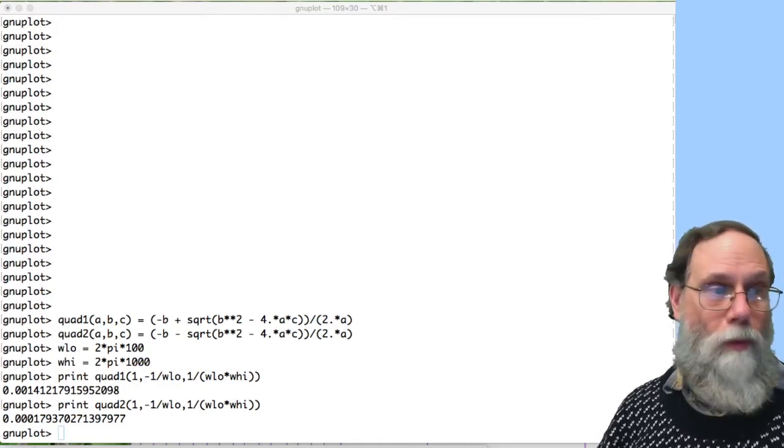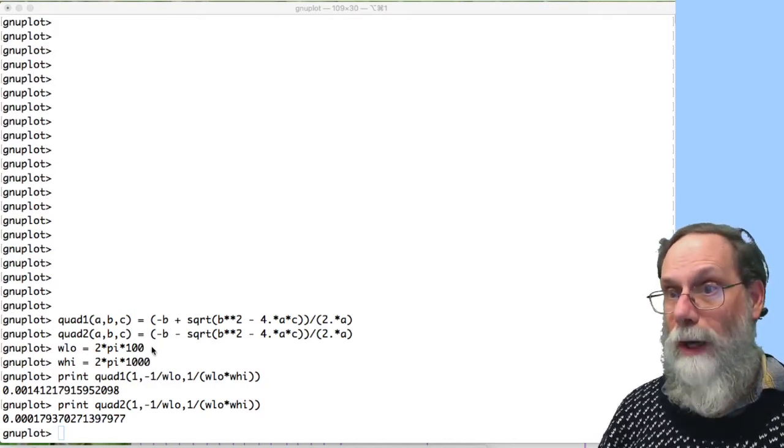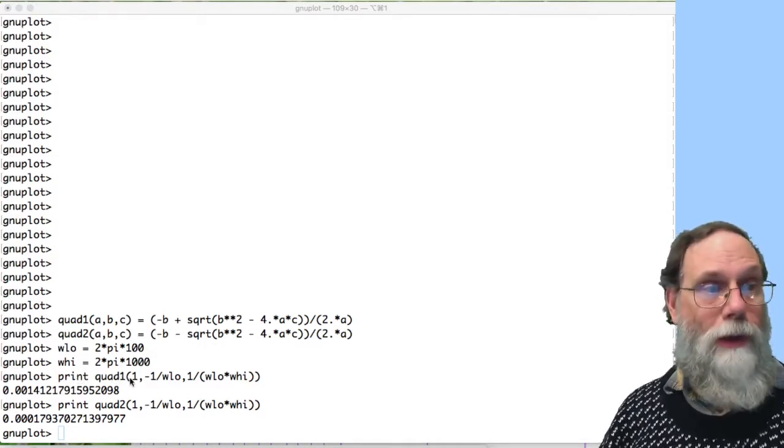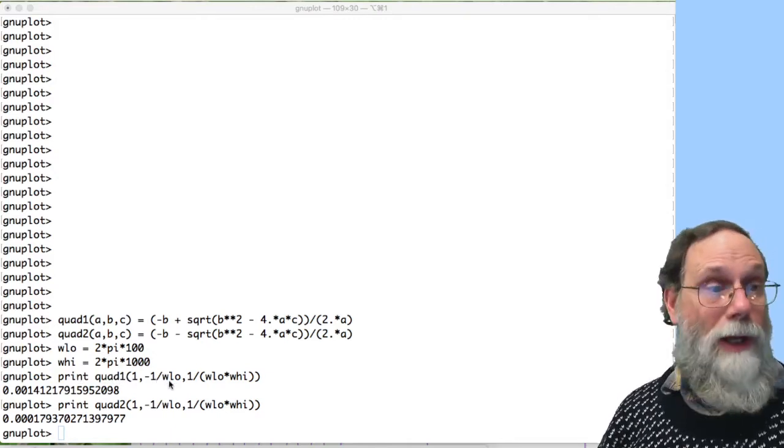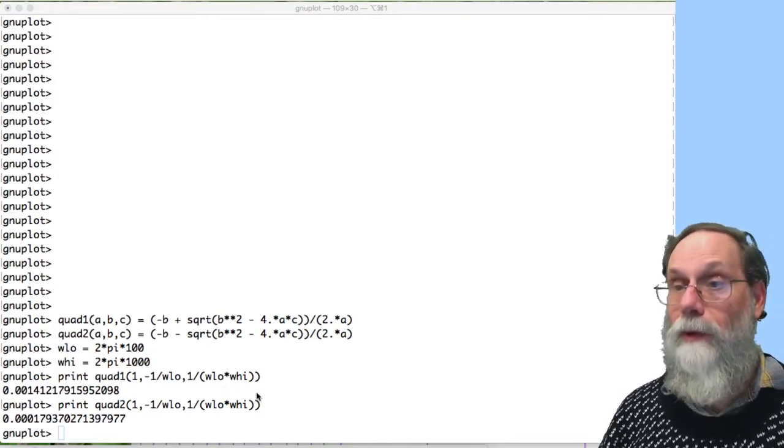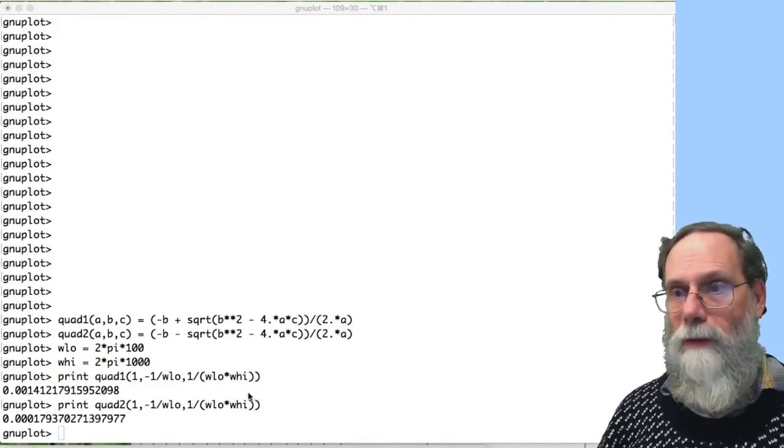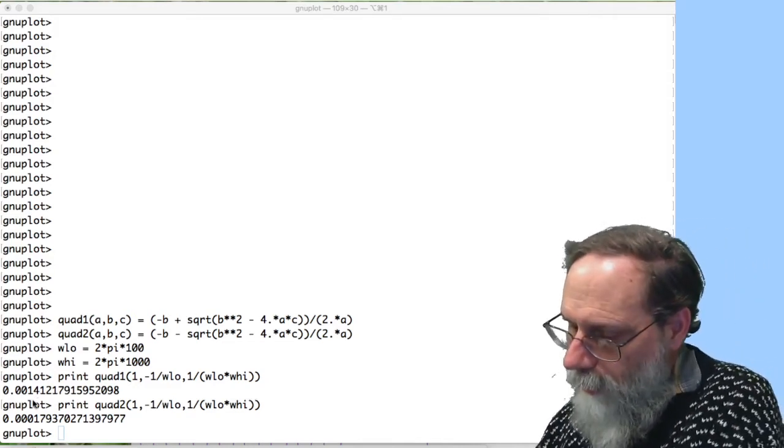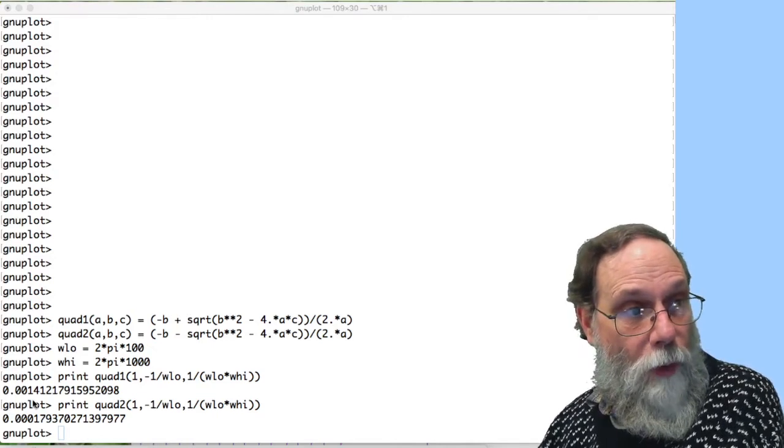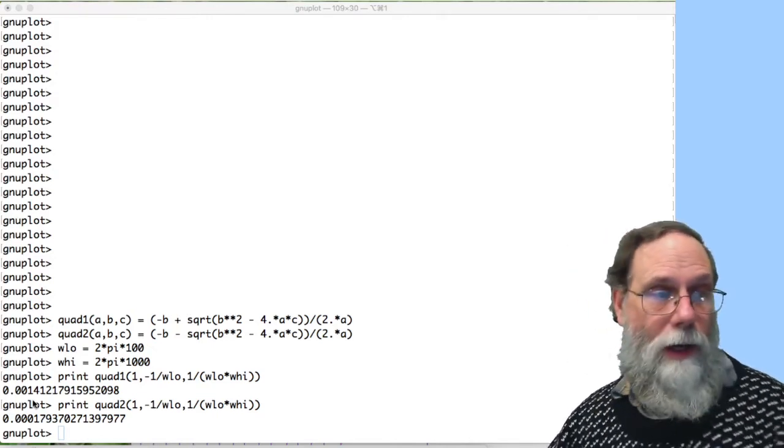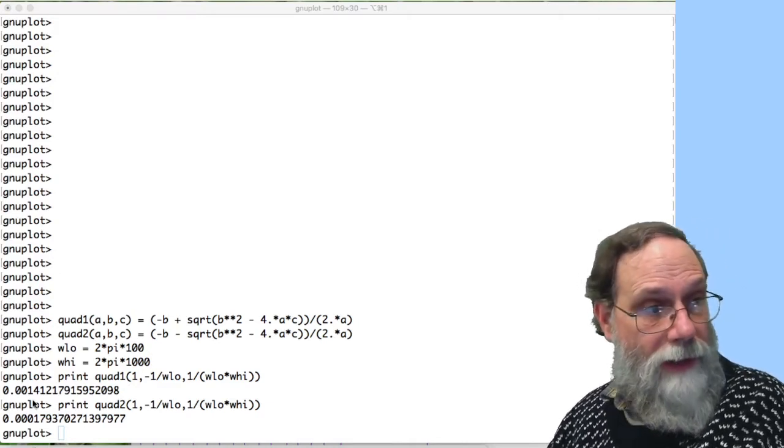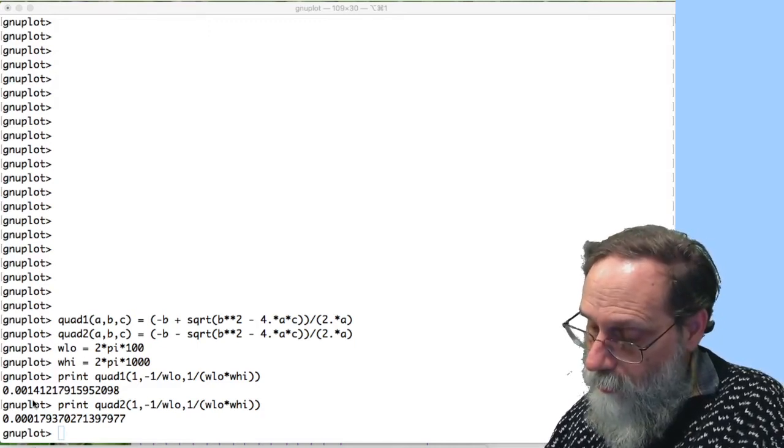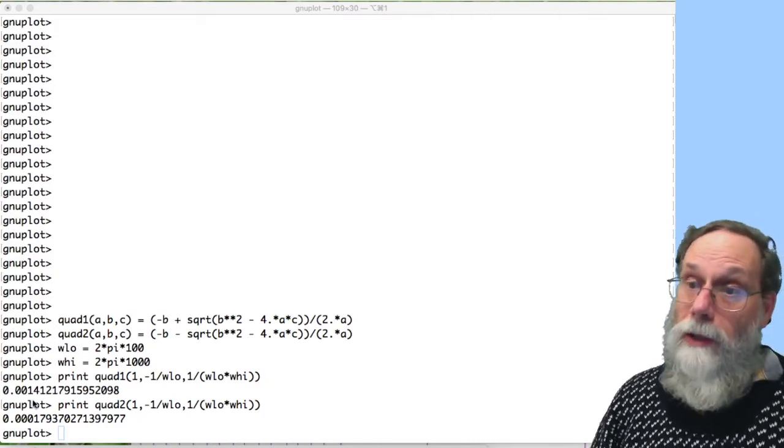And then I say, what's omega low? 2 pi times 100. What's omega high? 2 pi times 1,000. And then I just print quadratic formula, first root for 1 minus 1 over w low and 1 over w low, w high. Those were the coefficients of the quadratic equation I had. And I get, I'll write this down on my paper here. One of my roots here is 1.412 milliseconds. And then I printed out the other root. And that's 179.37 microseconds. So those are my two tau values.